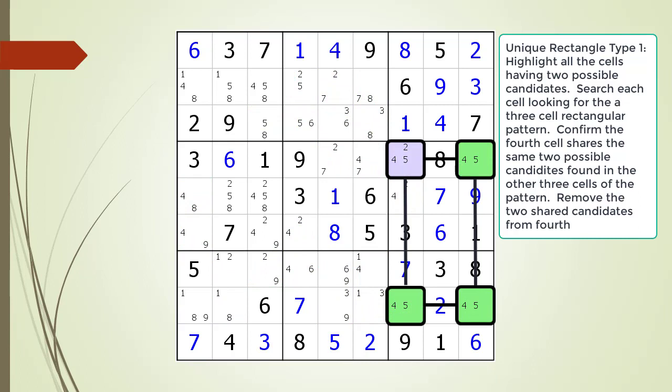Before we choose the possible 2 candidate as the value of cell 4,7, let's confirm the Unique Rectangle Type 1 logic.